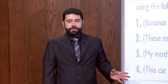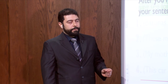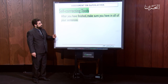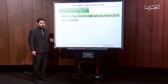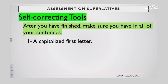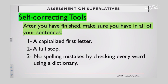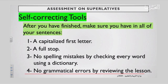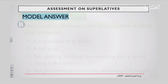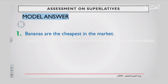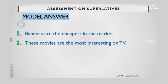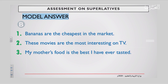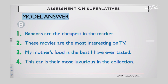All right, now let's go over the model answers. Before we do that, use the self-correcting tools. After you have finished, make sure you have in all your sentences: number one, a capitalized first letter; number two, a full stop; number three, no spelling mistakes — check every word using a dictionary; number four, no grammatical errors — review the lesson. Model answers: number one, bananas are the cheapest in the market. Number two, these movies are the most interesting on TV. Number three, my mother's food is the best I have ever tasted. Number four, this car is their most luxurious in the collection.